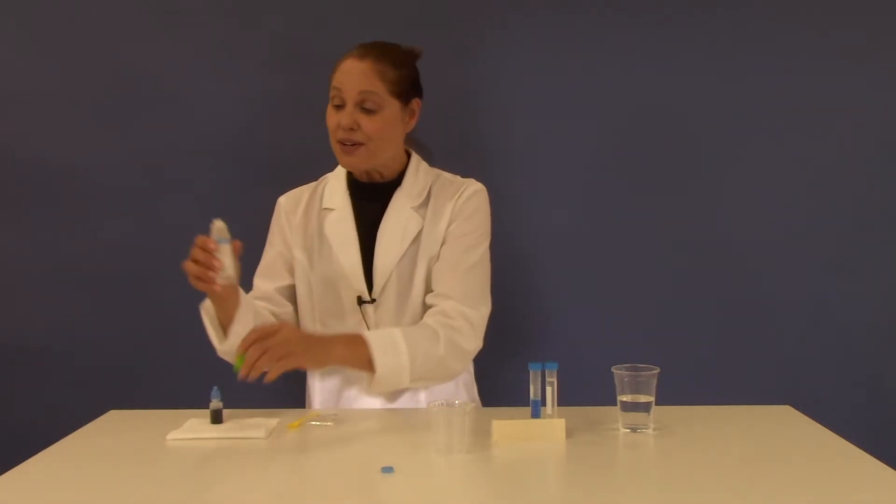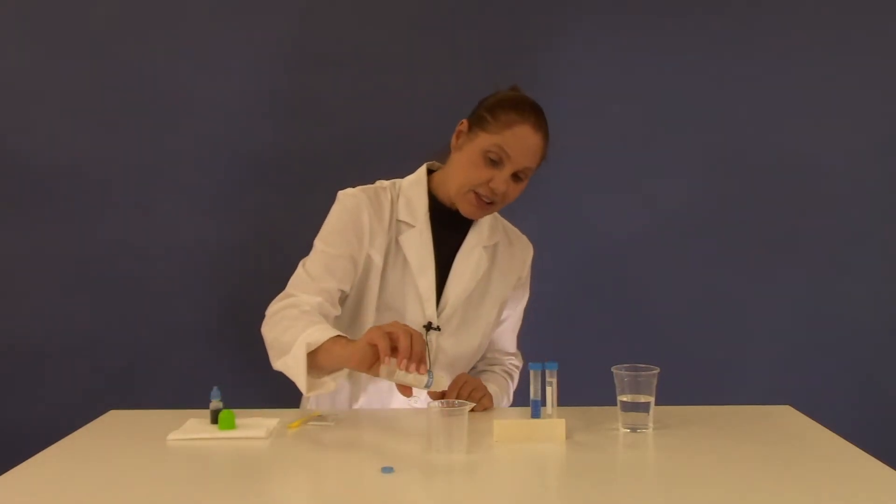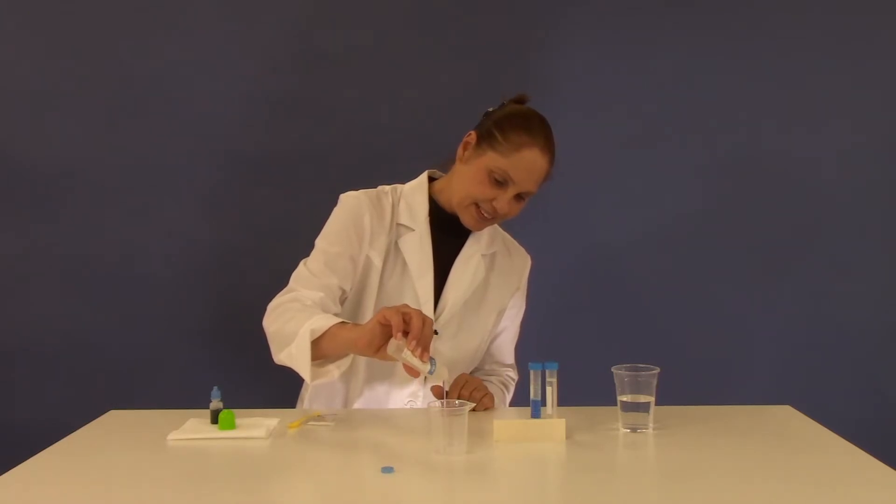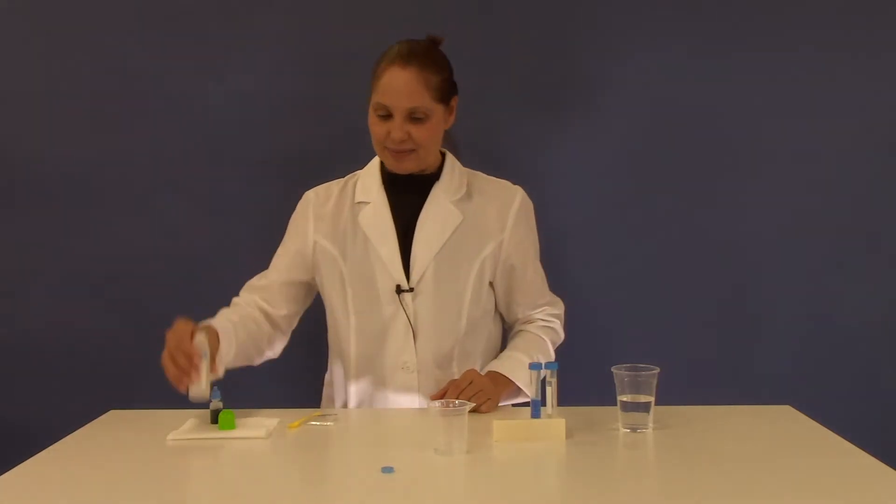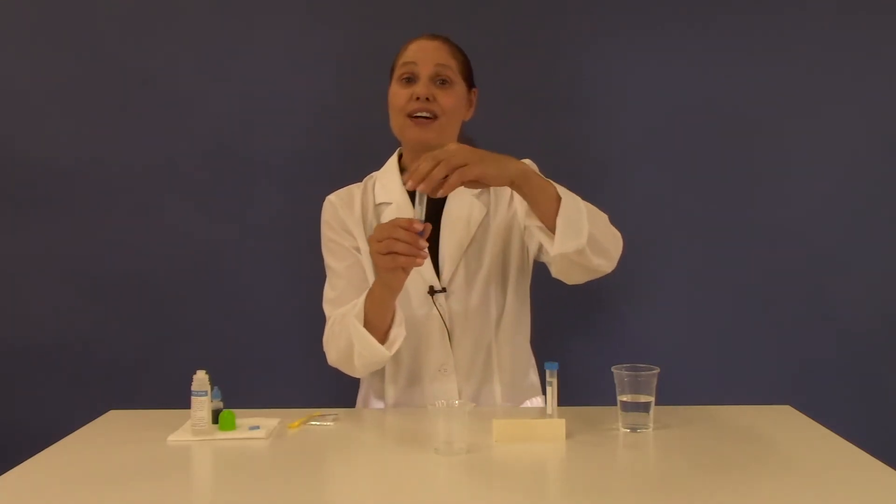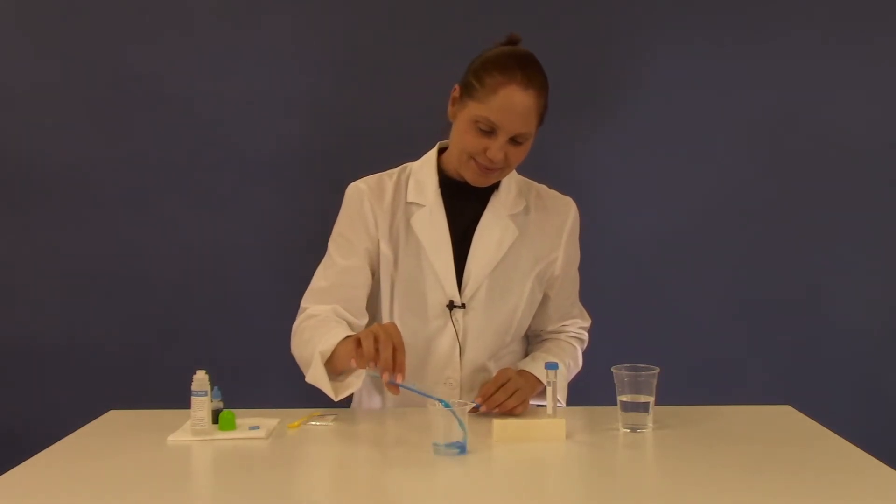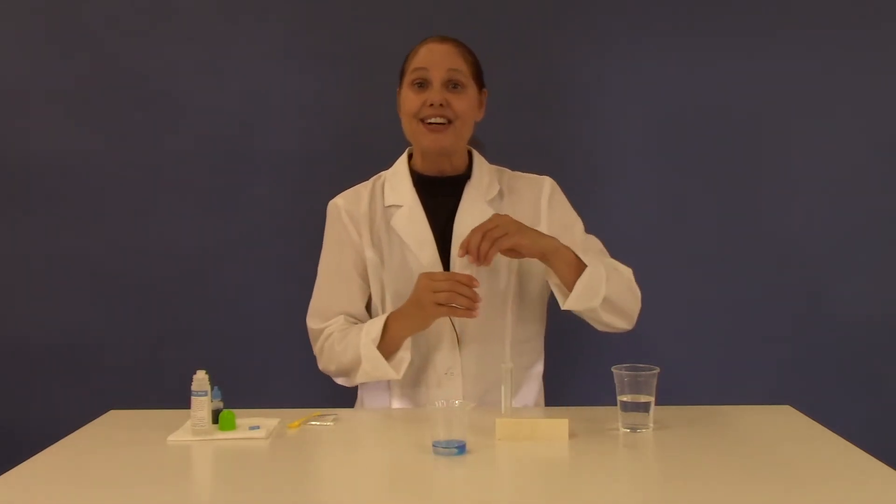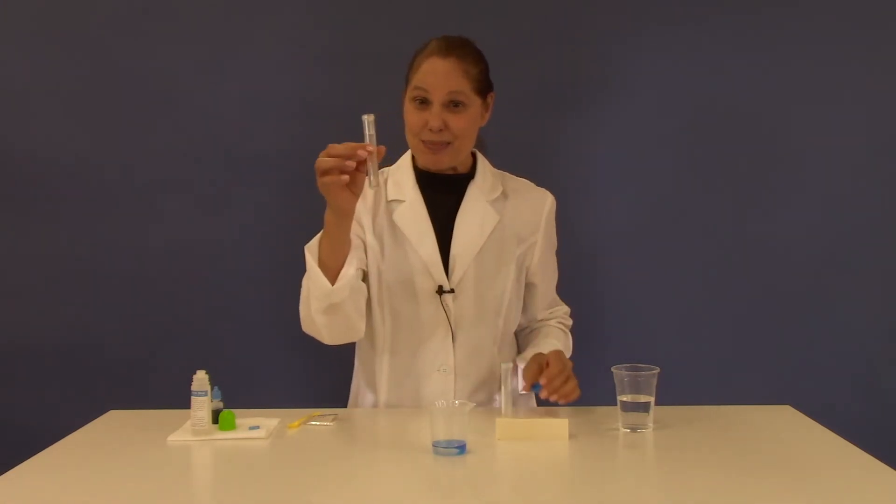Now, for the real fun part. To the beaker, add 20 milliliters of your glue, all of the contents from test tube number two, and then the contents of test tube number one.